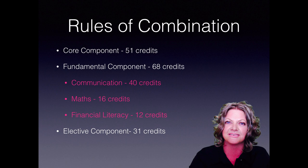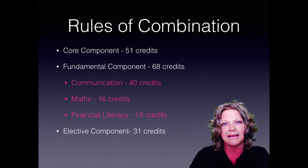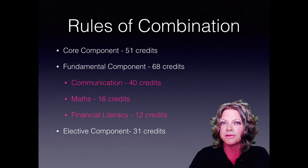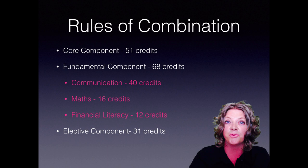The last part of the qualification is the electives, where we need 31 credits. Adding 51 plus 68 plus 31 gives you 150 credits total. I have differentiated between personal lines electives and commercial lines electives, so depending on which class of business you deal with, I will assess you against the relevant one. If you've already achieved your electives, I will not assess you against them at all — only against the balance of the qualification you still require.